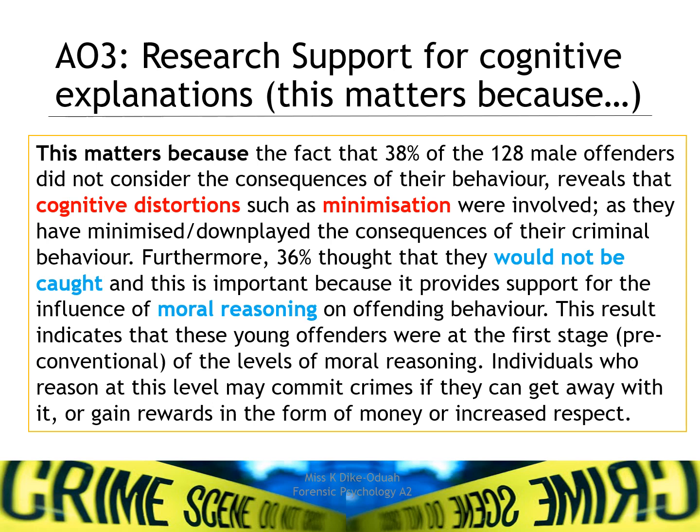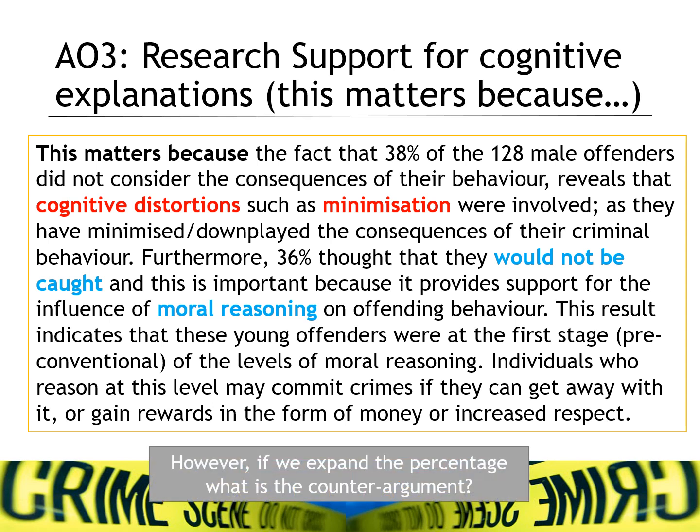However, if we unpack the percentage, 38% of the 128 male offenders did not consider the consequences — meaning the remaining percentage did consider the consequences and still went on to offend. This suggests that irrational thinking and moral reasoning are not the sole determinants of offending behaviour. So while this research provides support, it also provides counter-arguments showing that the cognitive explanation is not the total explanation for offending behaviour.